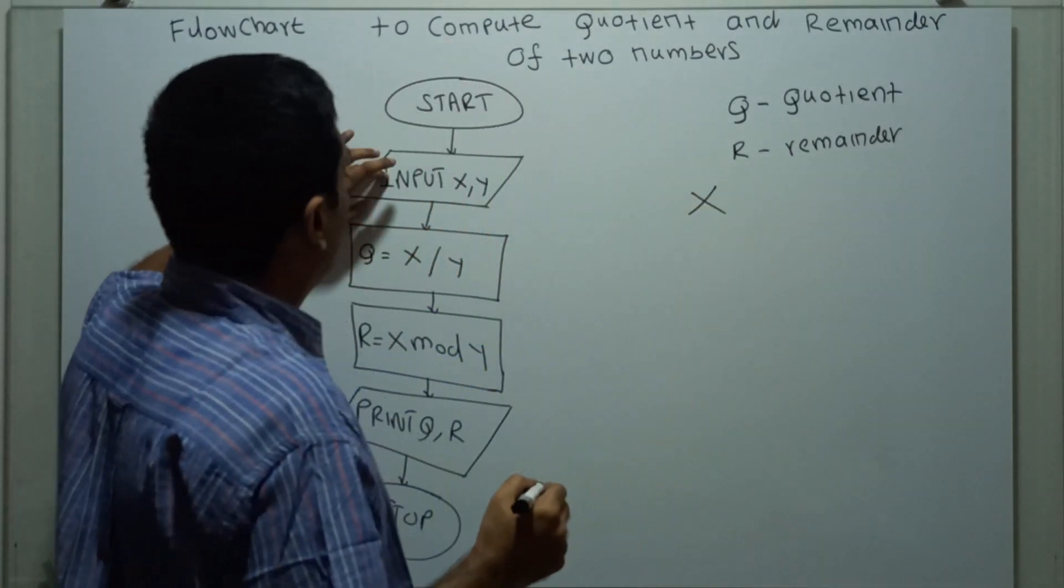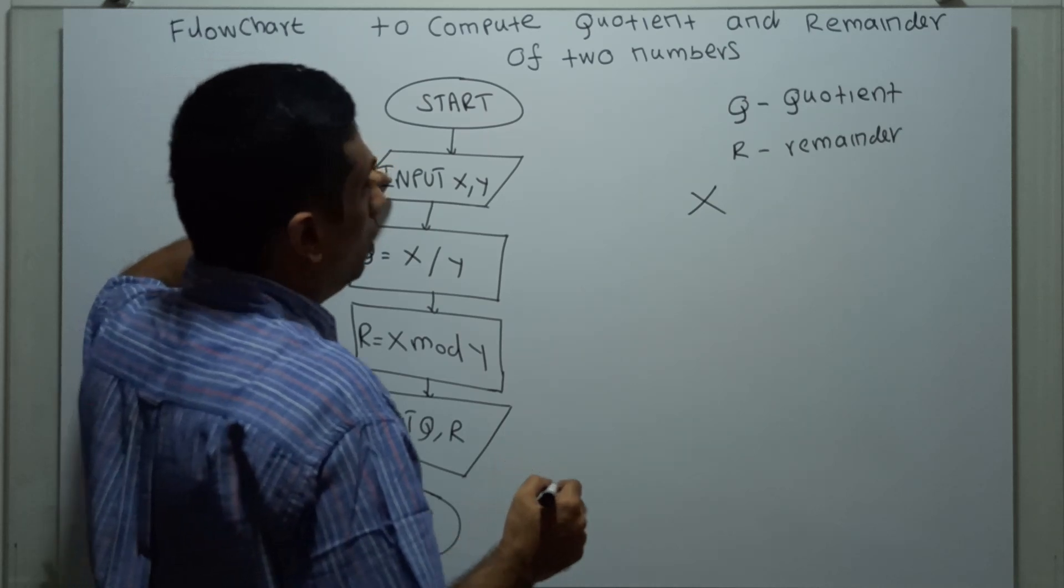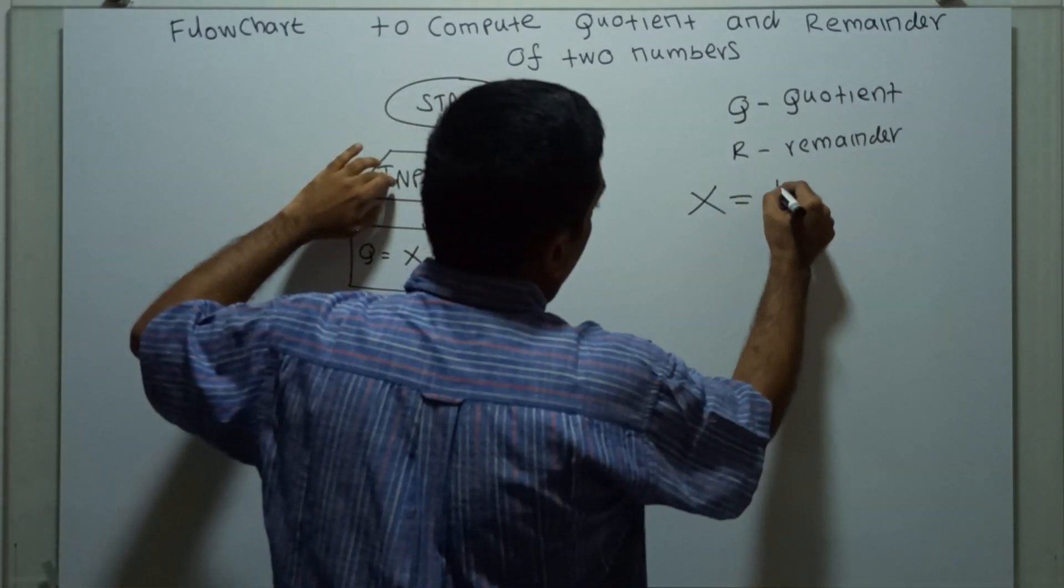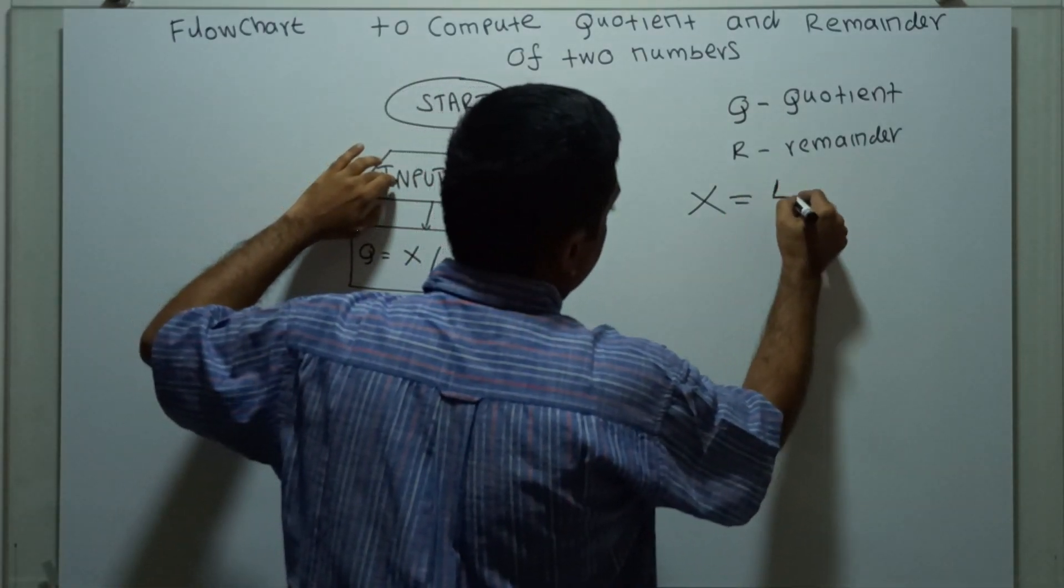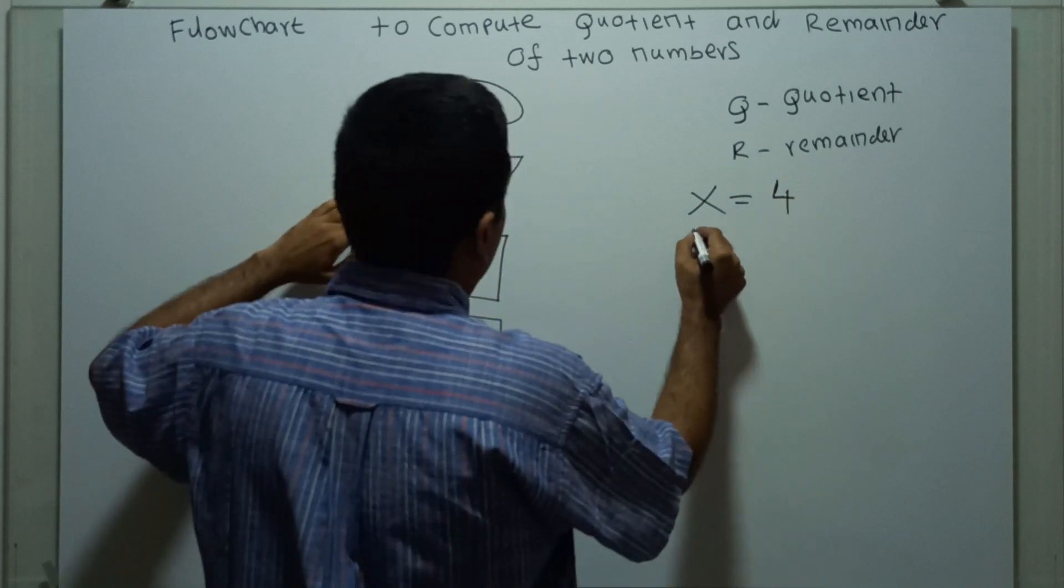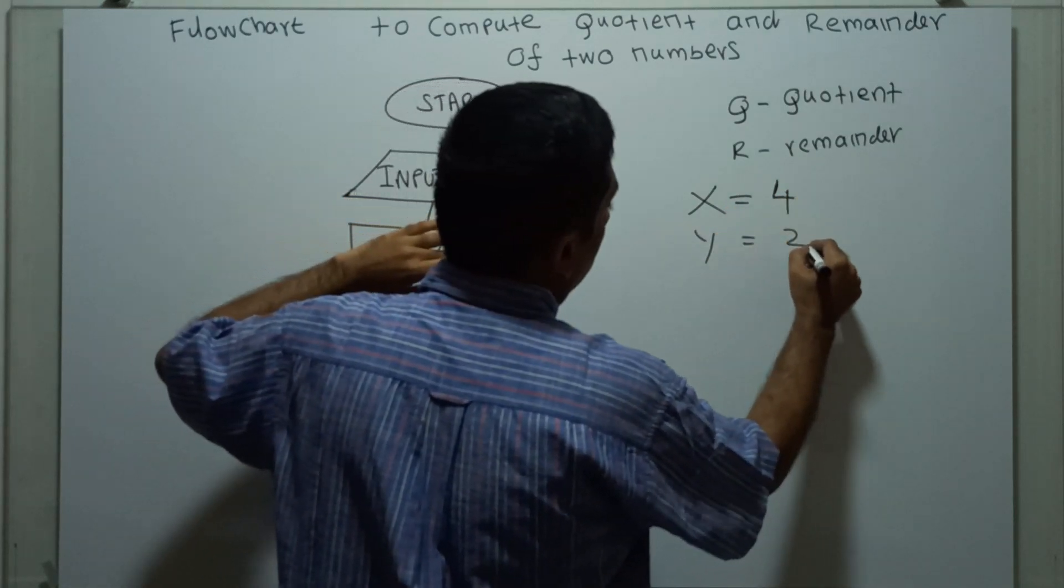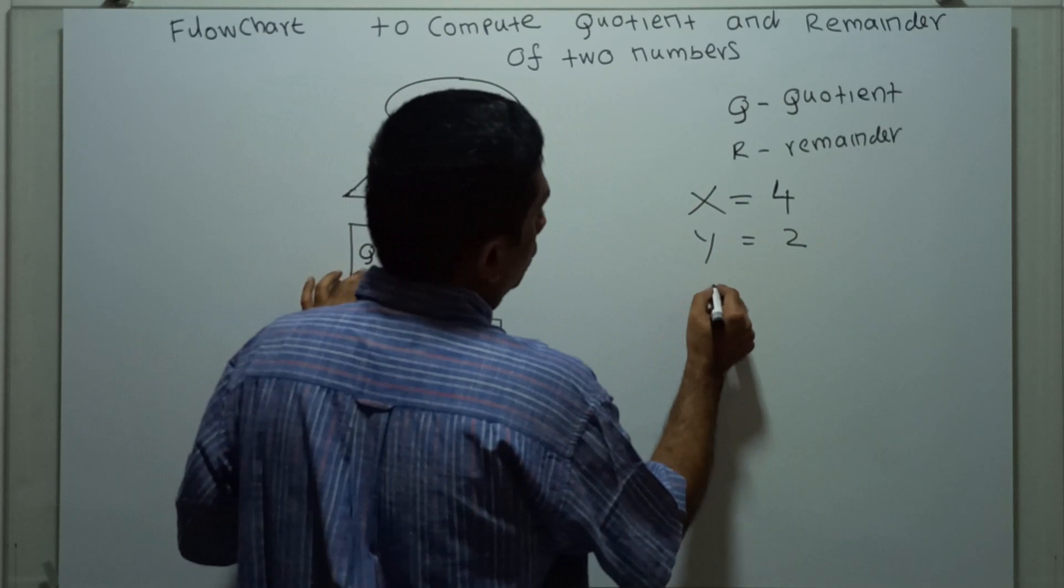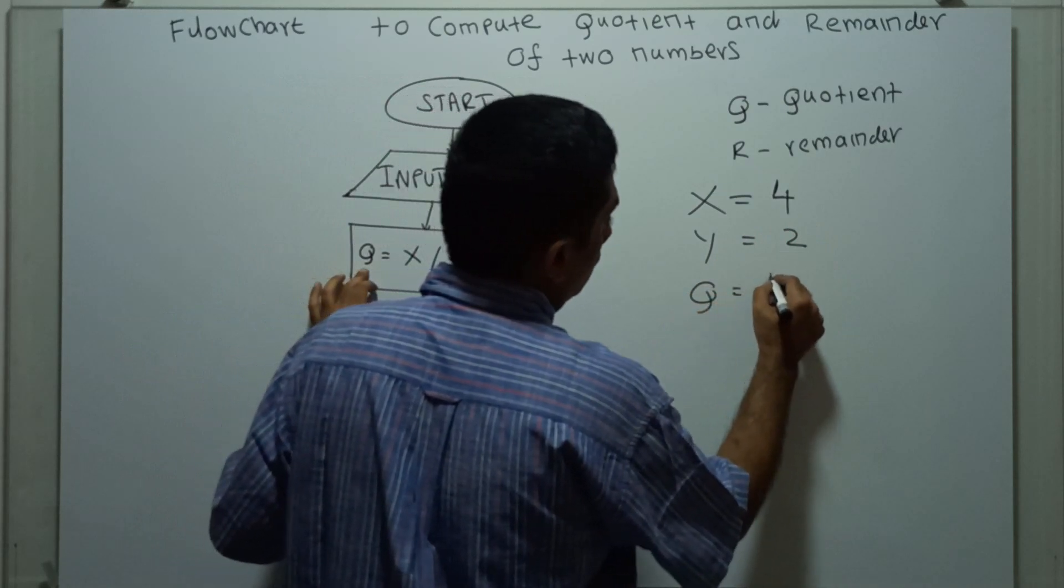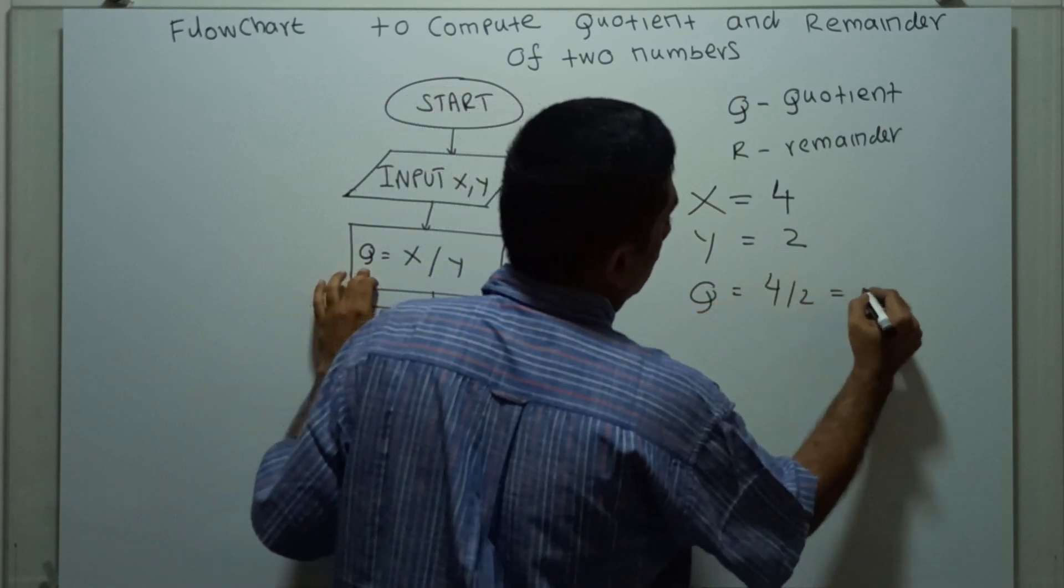I am obtaining input x and y. The value of x equal to 4, y equal to 2. So, quotient equal to 4 divided by 2 is equal to 2.